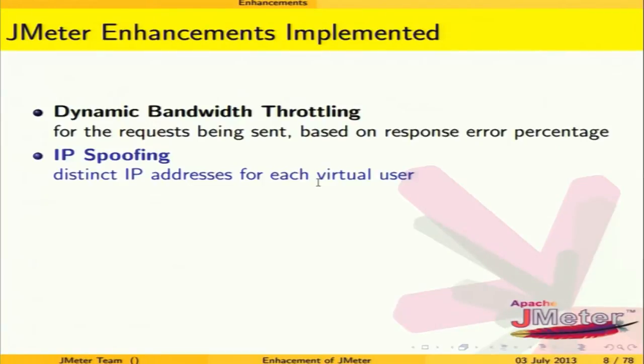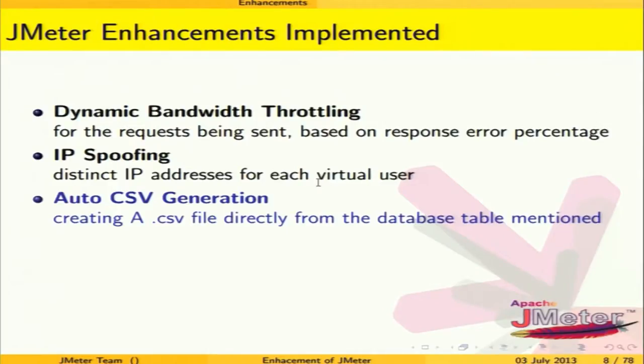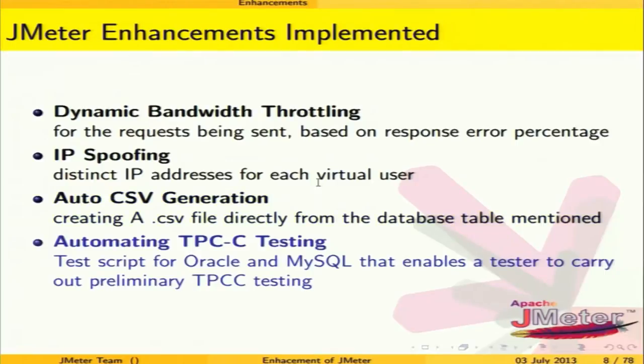The second enhancement is IP spoofing. We realized that when one uses JMeter, all requests go from one specific IP, but in a real-world scenario, people have different geographic locations and different IP addresses. We created an IP spoofing element where different IPs are created and selected from a CSV element. The third enhancement is auto CSV generation — we collected data from the database and directly put it into a CSV file, reducing the redundant work of the tester.